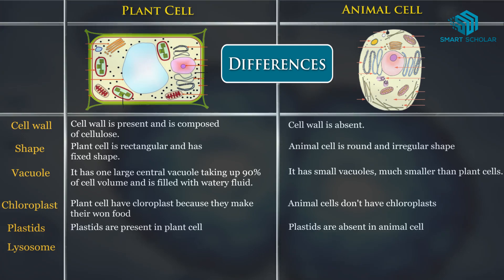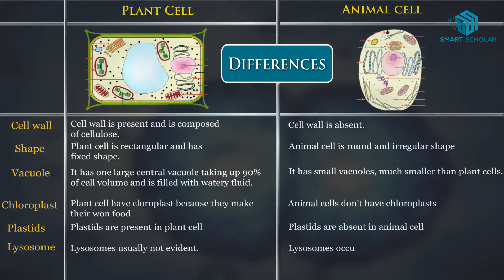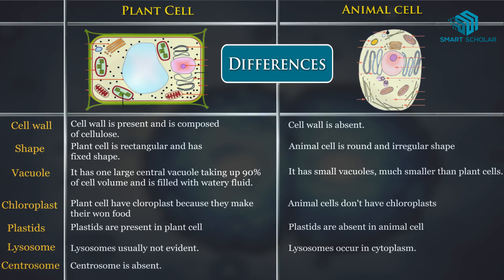Lysosomes are usually not evident in plant cells, whereas lysosomes occur in the cytoplasm of animal cells. Centrosome: the centrosome is absent in plant cells, whereas the centrosome is present in animal cells and helps in cell division.